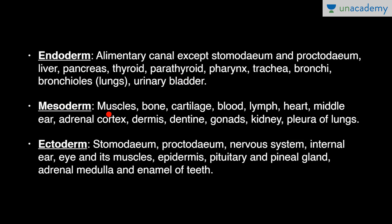Mesoderm gives rise to connective tissue, muscles, bone, cartilage, blood, lymph, heart, middle ear, adrenal cortex, dermis, dentine, gonads, kidney and pleura of lungs. All these structures are derived from mesoderm.